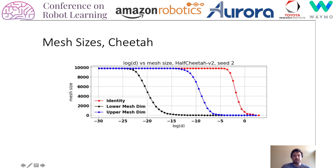Let's zoom in to the cheetah, which had the most dramatic differences. We can see here different plots for the mesh size versus the mesh resolution. We can see that for the lower and upper mesh dimension, not only is the slope of this line less steep than the unmodified agent — which corresponds to the fractal dimension reducing — but also for any given mesh resolution, the mesh size is also significantly smaller.